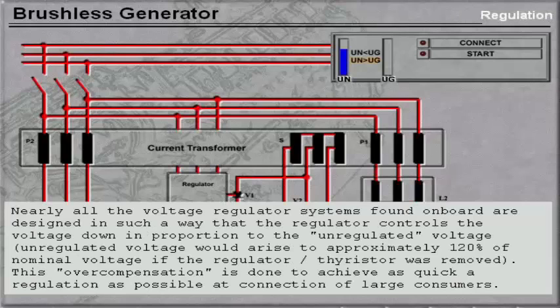Nearly all the voltage regulator systems found on board are designed in such a way that the regulators control the voltage down in proportion to the unregulated voltage. Unregulated voltage would rise to approximately 120% of nominal voltage if the regulator or thyristor were removed. This overcompensation is done to achieve as quick a regulation as possible during connection to large consumers.